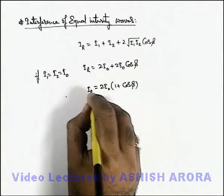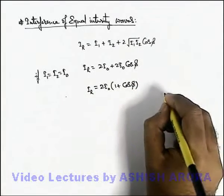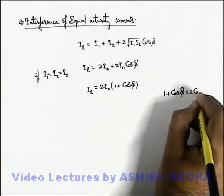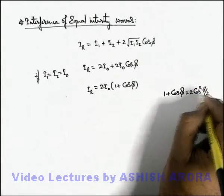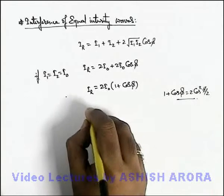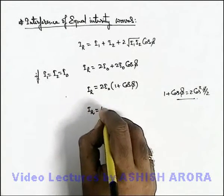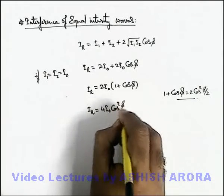And if we open this cosφ in half angle form, we can see 1 + cosφ we can write as 2cos²(φ/2). So if we use this identity, the resulting intensity will become 4I₀cos²(φ/2).